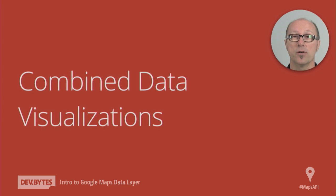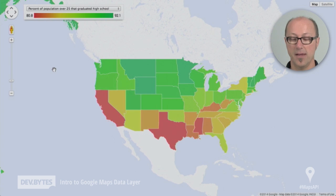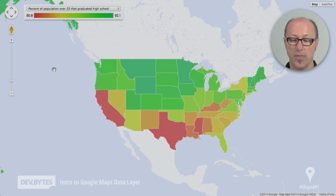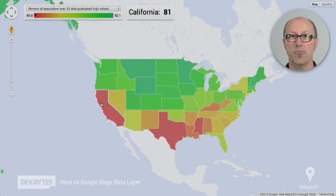So let's have a look at how you do that, taking a couple of different feeds and showing it on this really cool map of the US Census. Here we have a beautiful example where I've used US Census data to give me a nice layer on top of my map. We have a visual representation of the people over 25 that graduated high school. I've added a mouse listener so that when I move my mouse over California, you see it pops up a little card that tells me 81% of people in California graduated high school.